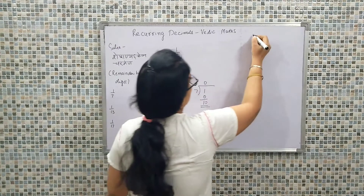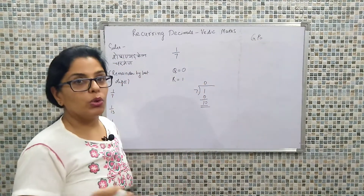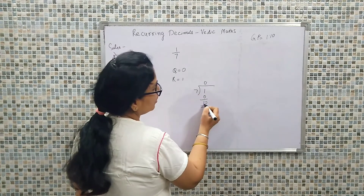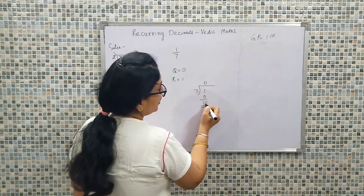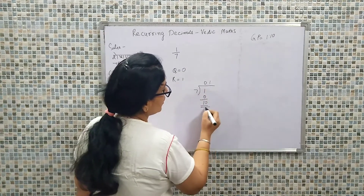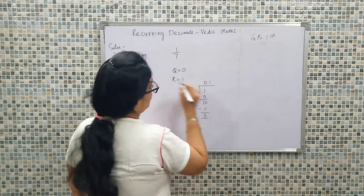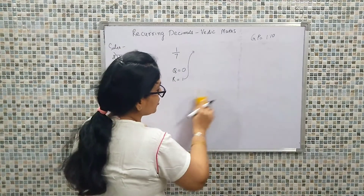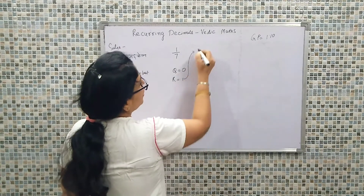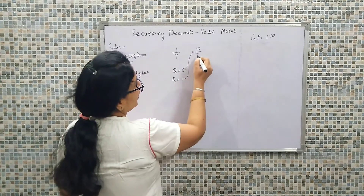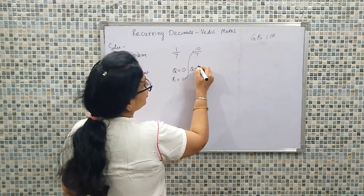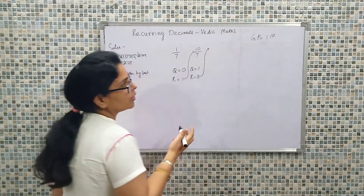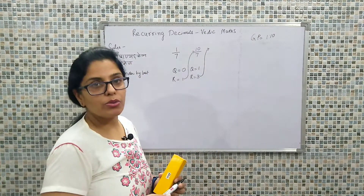It means that when we talk about 1 upon 7, our GP ratio is 1 to 10. This is because before the decimal our remainder was 1, now we've added a zero making the value 10. So 10 divided by 7: quotient is 1, since 7 times 1 is 7, and the remainder is 3. We have assumed the GP ratio is 1 to 10. So now: 3 into 10 is 30; 30 upon 7 — quotient is 4 (since 7 times 4 is 28) — remainder is 2. Next: 20 divided by 7 — 7 times 2 is 14 — remainder is 6. Next: 60 upon 7 — 7 times 8 is 56 — remainder is 4. Next: 40 upon 7 — 7 times 5 is 35 — remainder is 5. Next: 50 upon 7 — 7 times 7 is 49 — remainder is 1. We are back to the same remainder, so we stop.